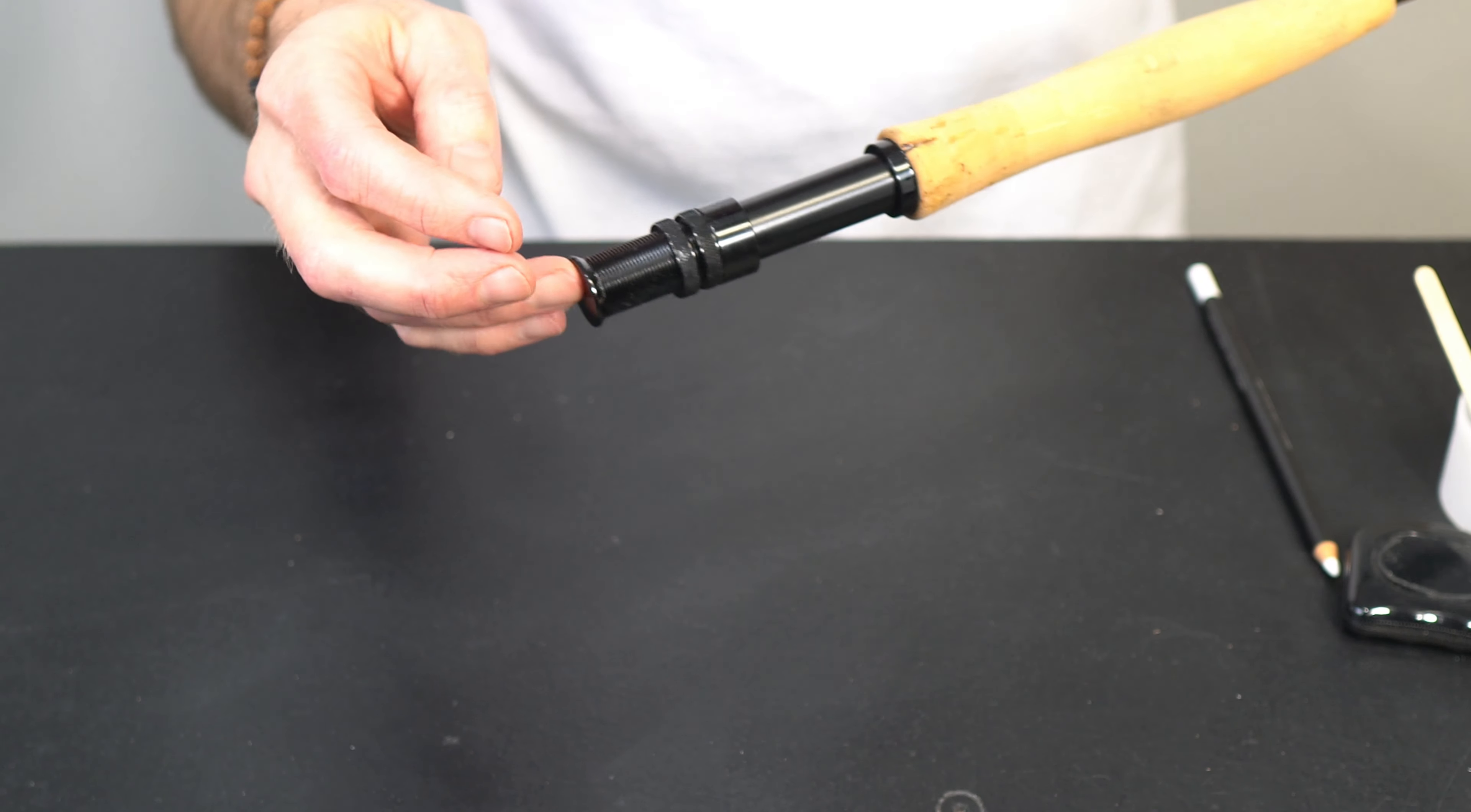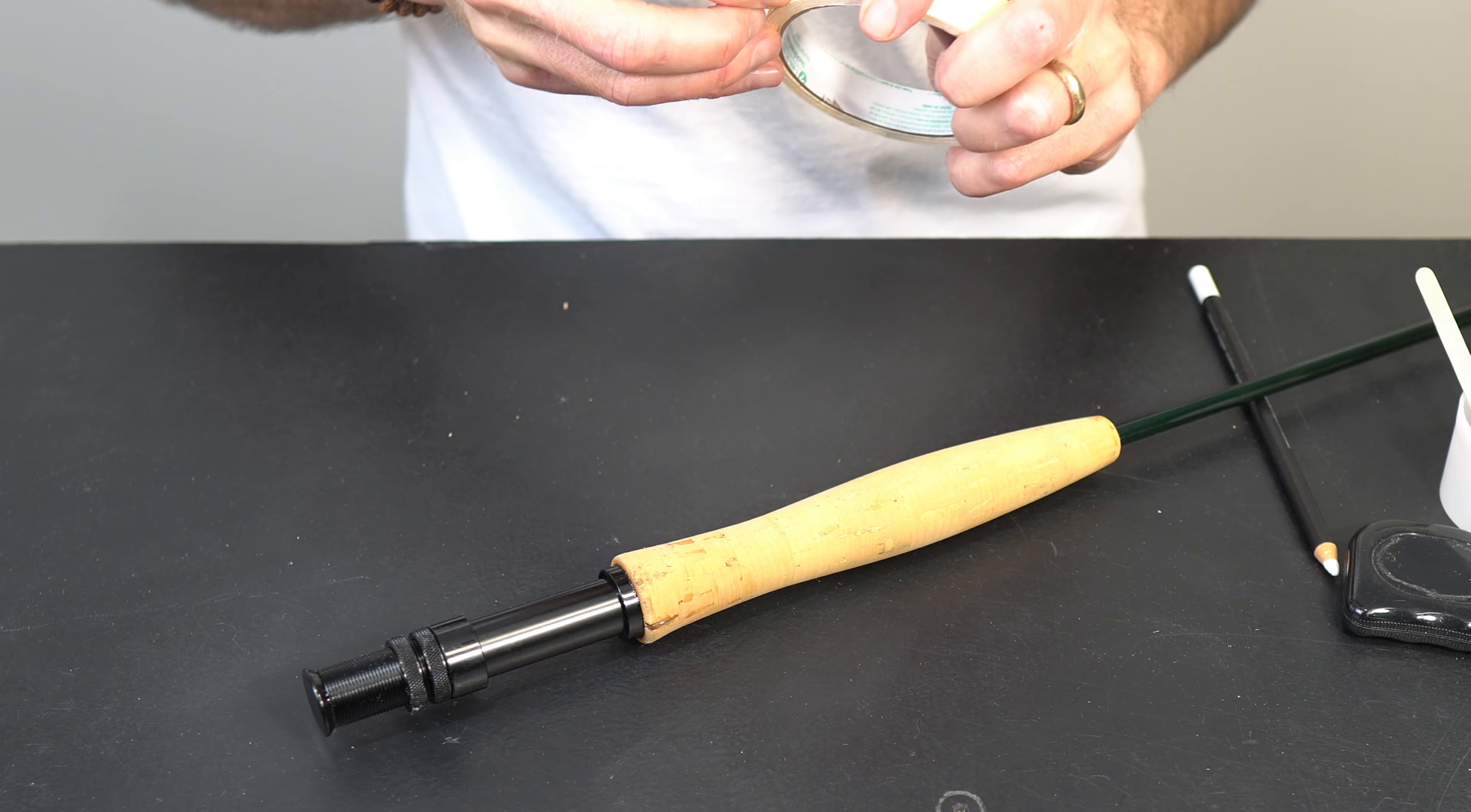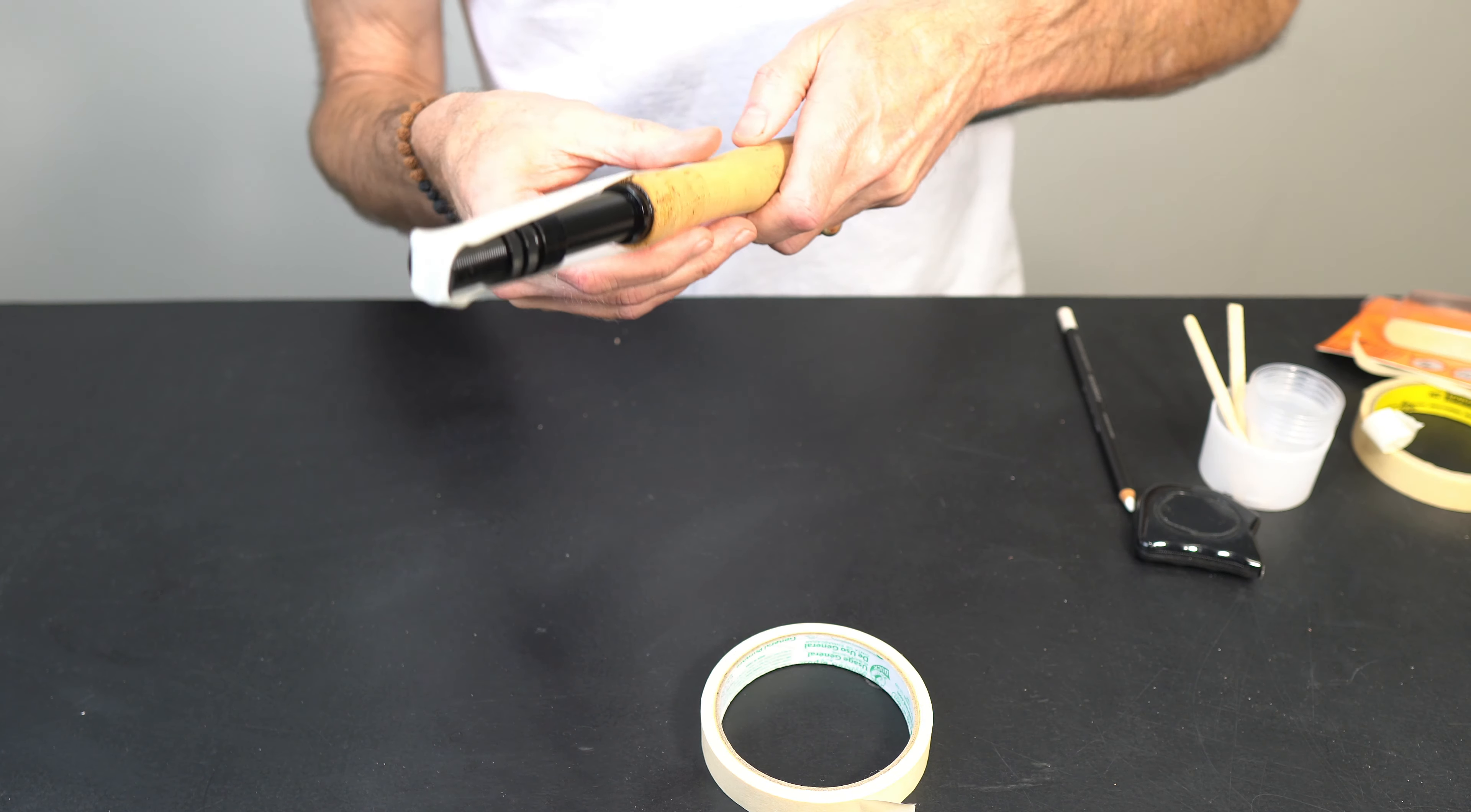Everything's glued up, it's setting up. Now is a good time to just take a little break, but before I do that I'm going to put a little bit of masking tape on everything to hold that end cap in place. Putting a little bit of pressure on there, kind of putting some tension on it in order to hold everything together. We're going to set this out overnight.